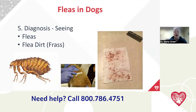Flea frass — flea dirt or flea poop — looks like little black specks. They kind of look like dirt, but when you put them on a wet gauze or wet paper towel, they turn into blood because of the blood meal the flea ingested. If you rehydrate it, it turns red. So this is how to tell the difference between regular dirt and flea dirt. If you're finding flea frass, it confirms that fleas are actively living on the pet.